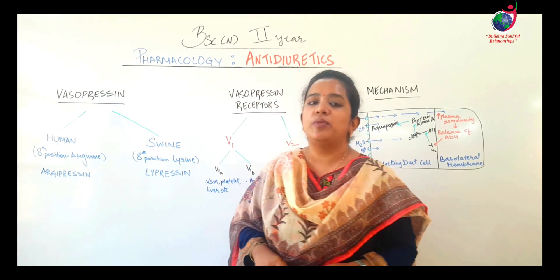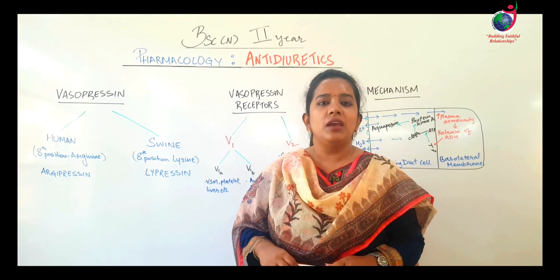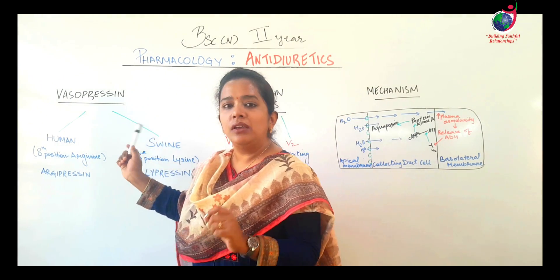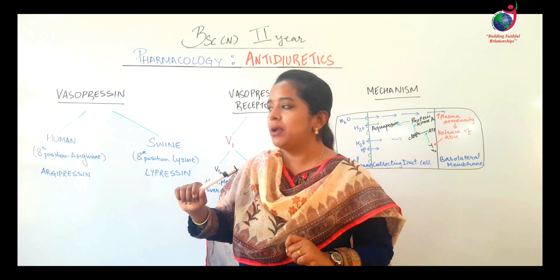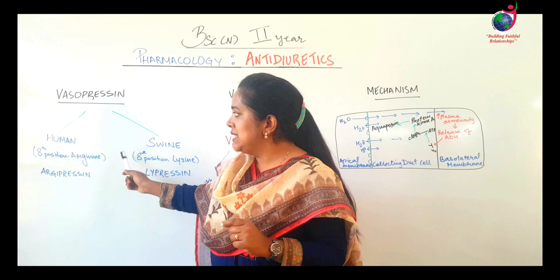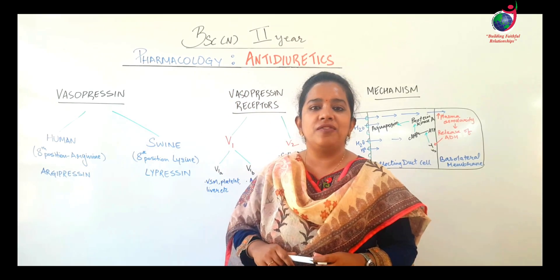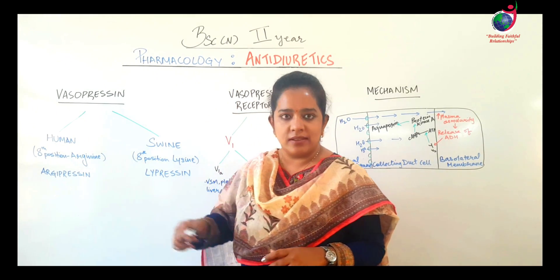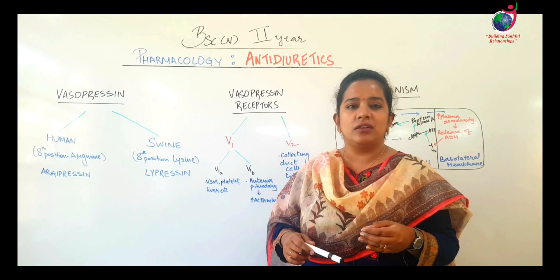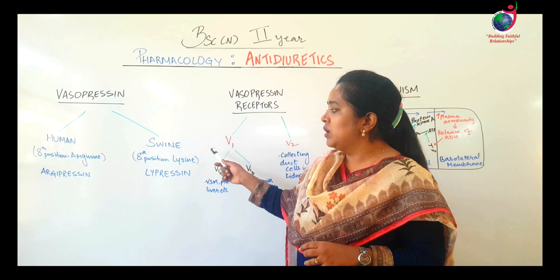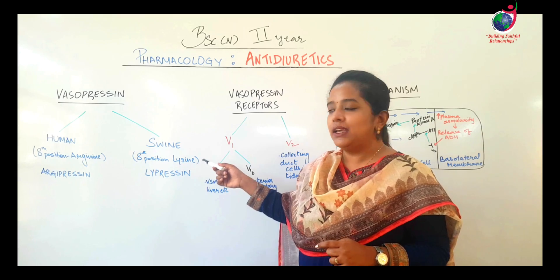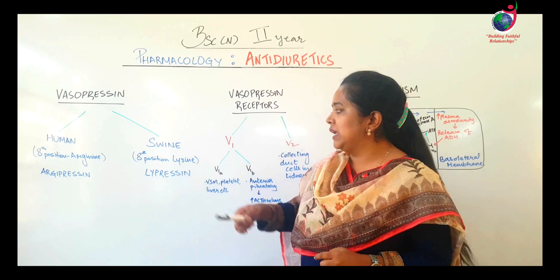Vasopressin is a nonapeptide — it has nine amino acid constituents. In vasopressin released in human beings, the eighth amino acid is arginine, so we call it argipressin. Similarly, in swine or pig vasopressin, the eighth position has lysine present, so we call that lypressin.